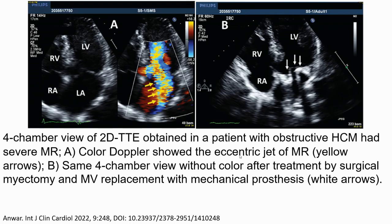This is the 2D four-chamber view obtained in a patient with obstructive cardiomyopathy. Transesophageal echocardiography showed severe mitral valve regurgitation. A: Color Doppler showed the eccentric jet of mitral valve regurgitation. B: The same view in 2D without color, after treatment by surgical myectomy and mitral valve replacement with a mechanical prosthesis.